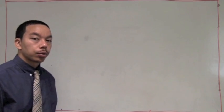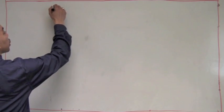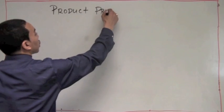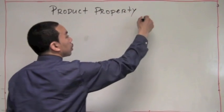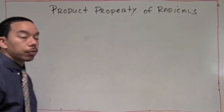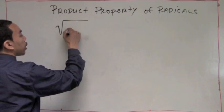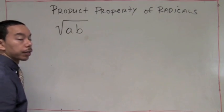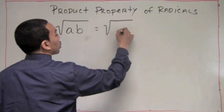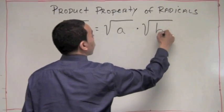Today we're going to look at radicals and different properties of radicals. Let's first look at one property called the product property of radicals. The product property of radicals states that if we have a radical and the radicand is a product of A and B, then we can rewrite them as a radical with A times a radical with B.